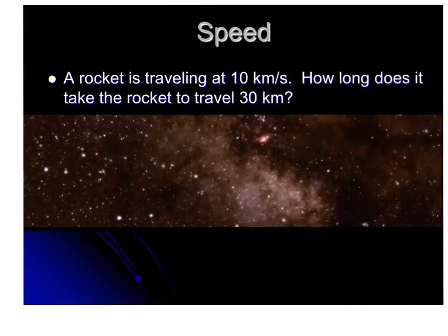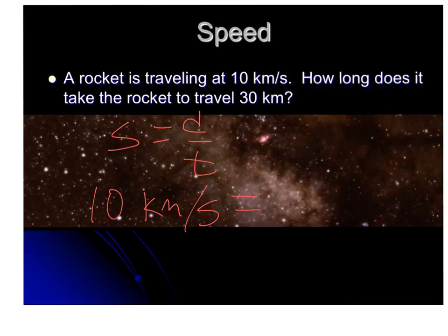This example says a rocket is traveling at 10 kilometers per second. How long does it take the rocket to travel 30 kilometers? Our equation is that speed equals distance over time, so our speed is 10 kilometers per second. Our distance is 30 kilometers. So what is our time? My units match up, so I don't need to convert anything. So 30 divided by 10 is going to give me 3 seconds.